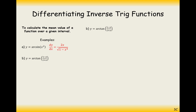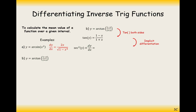Part B: y equals arctan of (1 − x)/(1 + x). This could be done by chain rule, but it's actually easier to tan both sides and then differentiate implicitly. tan y differentiates to sec² y · dy/dx, and the right-hand side uses the quotient rule: differentiate the top times the bottom, minus the top times the derivative of the bottom, all over the bottom squared.